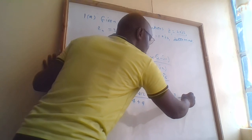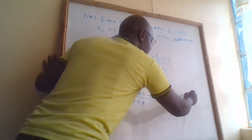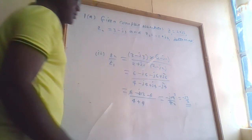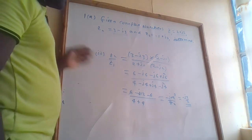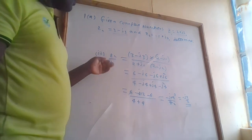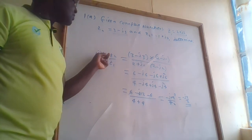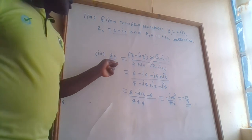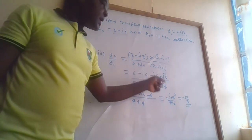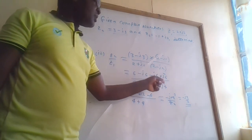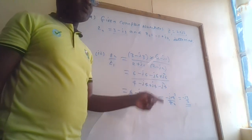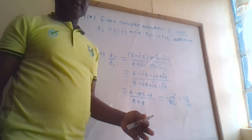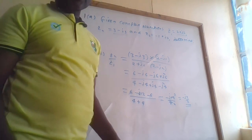Dividing, minus j12 over 8 simplifies: 12 divided by 8 gives 3 over 2. Therefore Z2 divided by Z1 equals minus j3 over 2, or equivalently minus j·(3/2). Thank you for listening and watching.